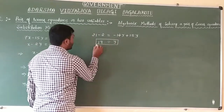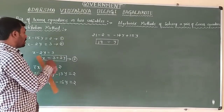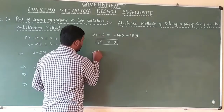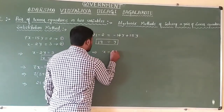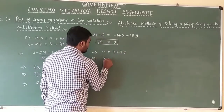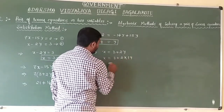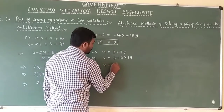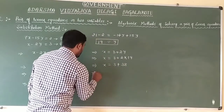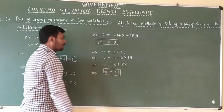The value of y is 19. Now let us find the value of x by substituting this value of y into equation number 3, which is x equals 3 plus 2y. This gives x equals 3 plus 2 times 19, which is 3 plus 38, so x equals 41.